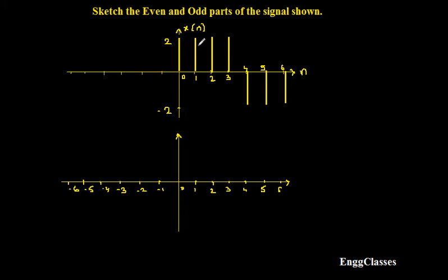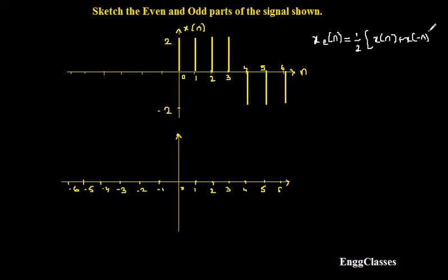This is how the given signal x of n looks like. The equation for the even part x_e of n is equal to 1/2 times [x(n) + x(-n)]. This is the formula to find the even part of any signal. Similarly, the formula for the odd part is 1/2 times [x(n) - x(-n)].